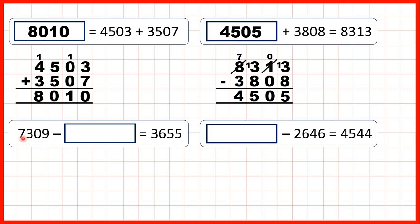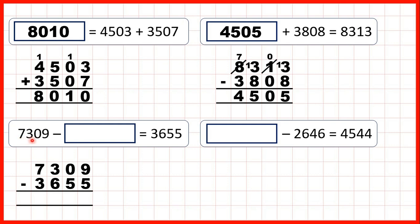Now, 7,309 minus something equals 3,655. Here it's the second number in our subtraction — our subtrahend — that's missing. And whenever the second number or subtrahend is missing, we still use subtraction to find our missing number. We need to subtract our difference, or our answer, from our minuend, and work out 7,309 minus 3,655.